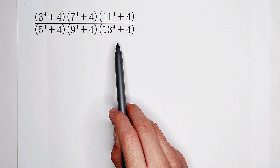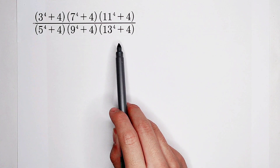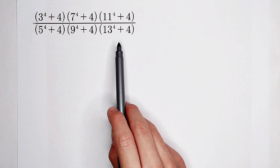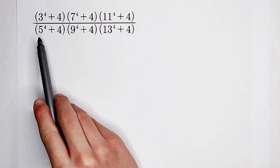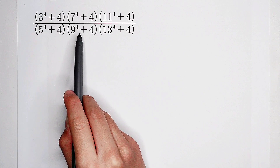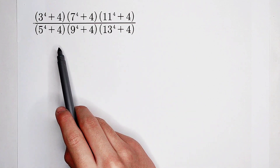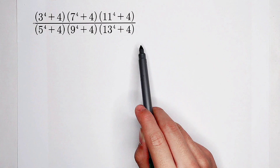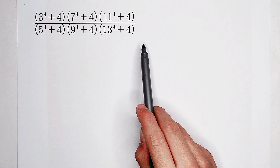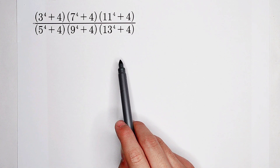Have a look at the factors. They have the same form. Look: 3 to the power 4 plus 4, 7 to the power 4 plus 4, 11 to the power 4 plus 4, 5 to the power 4 plus 4, and so on. So what's the form? Of course, n to the power 4 plus 4. So that's the general form.